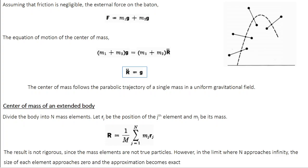This is a simple second-order differential equation; you integrate it twice. Integrating once gives g·t; integrating again gives g·t²/2. So the solution is r ∝ g·t², which has the form y = x² — the general equation for a parabola. The center of mass follows a parabolic trajectory, just like a single mass in a uniform gravitational field.